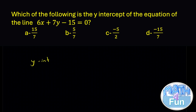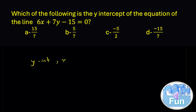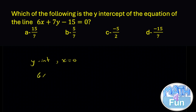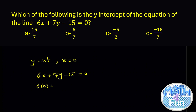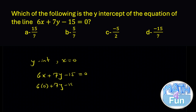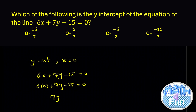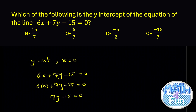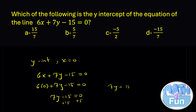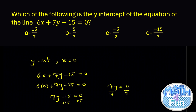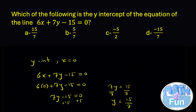Write at the top: y-intercept happens when x = 0. Take the equation 6x + 7y - 15 = 0 and replace x with 0: 6(0) + 7y - 15 = 0. Since 6 × 0 = 0, we get 7y - 15 = 0. Add 15 to both sides: 7y = 15. Divide both sides by 7: y = 15/7.